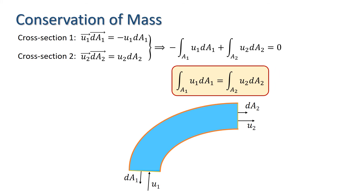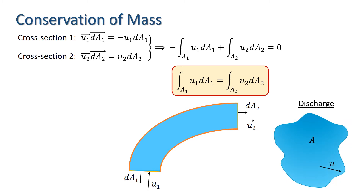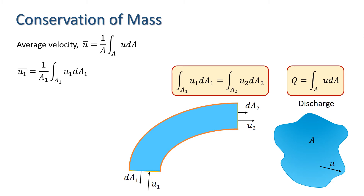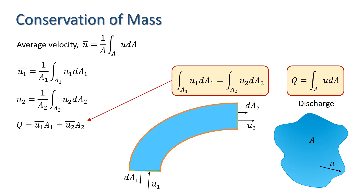We introduce the concept of discharge, or volumetric flow rate. The discharge Q is defined as the integral of u dA over the surface of a control volume. The average velocity over a cross section A is defined as u-bar equals 1/A times the integral of u dA over A. Thus, u1-bar equals 1/A1 times the integral of u1 dA1, and u2-bar equals 1/A2 times the integral of u2 dA2. The continuity equation tells us that Q equals u1-bar times A1, and that equals u2-bar times A2.